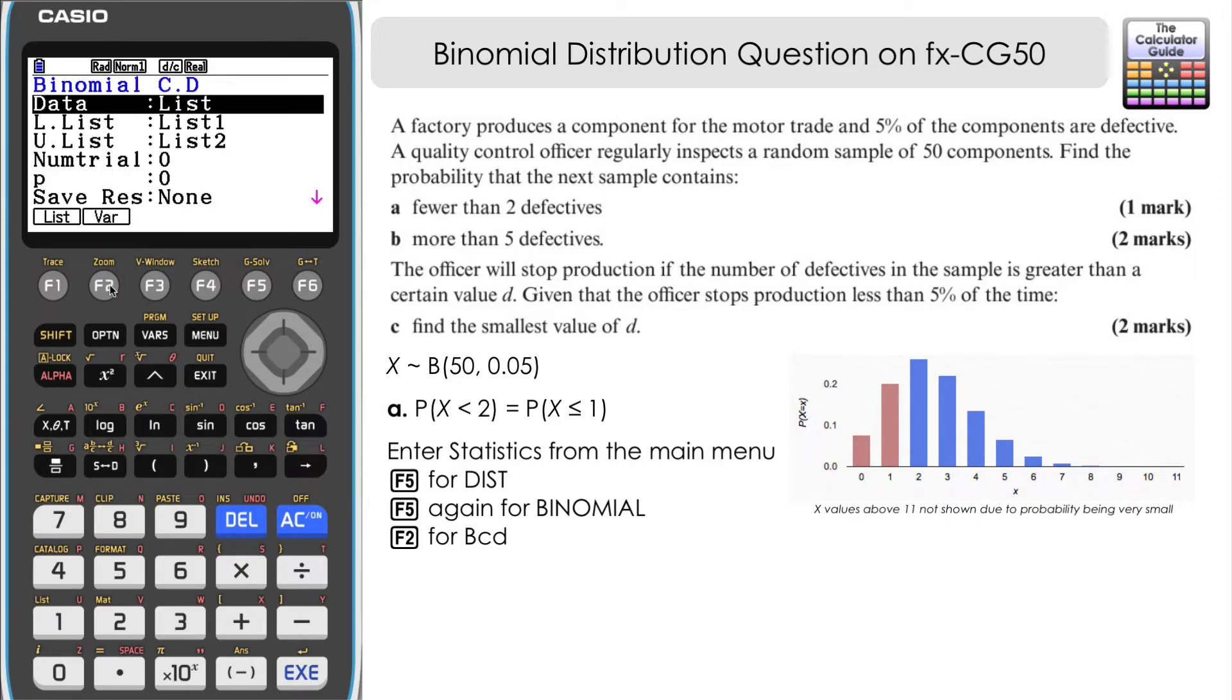Now, we've got two choices here. If we had a list of numbers, we could input that here, but we actually have the variables here. We know the number of components that were sampled and we know the probability. So we're going to press F2 for variable.